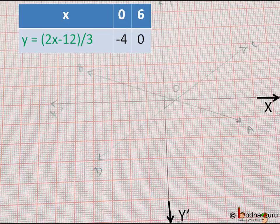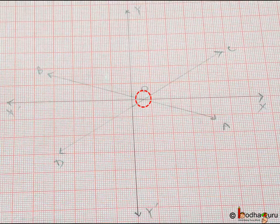Same way CD is the graph for the second equation. We have two points: 0 comma minus 4 and 6 comma 0. And as you can see they intersect at a point which has 6 comma 0 as the coordinate.